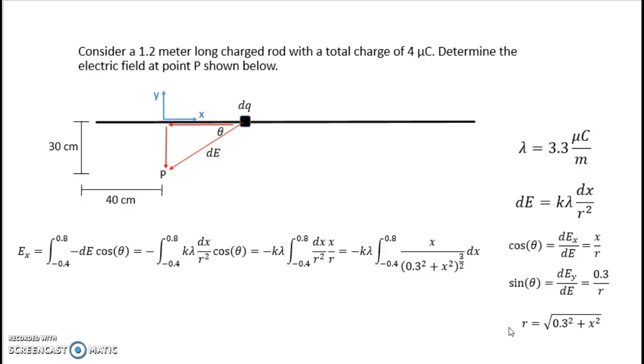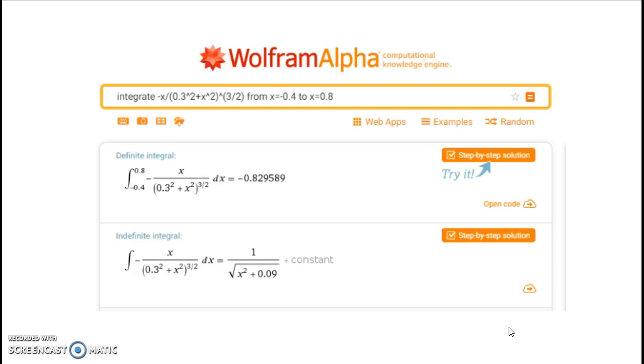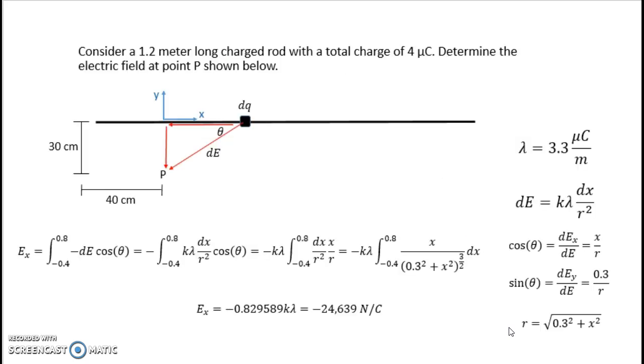This integral is not especially challenging, but if I don't feel like flexing my calculus muscles, I can always ask Wolfram Alpha to do it for me. So here I left off the k times lambda and just did the integral piece. Wolfram Alpha tells me what I get. I can then multiply that by k lambda and I get an x component of the electric field at point P of negative 24,639 newtons per coulomb. And if you are working this out on your own, it is worth it to stop, think through the units that you get when you carry out this integral, and actually check that the units do work out to be newtons per coulomb.